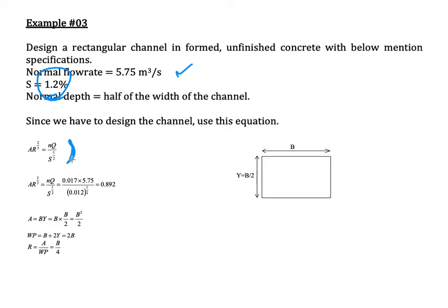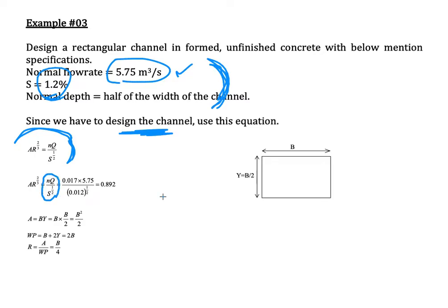Engineers often use this rearranged form of the equation because it clearly separates calculating flow rate from designing the channel. We calculate the left-hand side: n times Q divided by the square root of S. Substituting n, Q equals 5.75, and S equals 1.2 percent which is 1.2 over 1000, we get the result equal to 0.892.